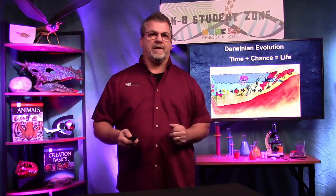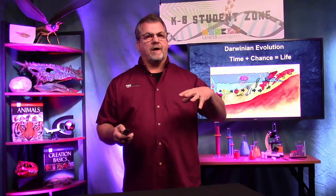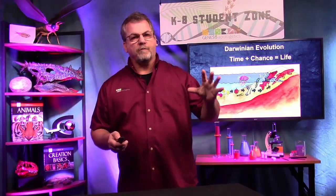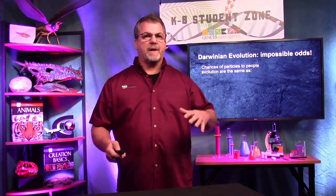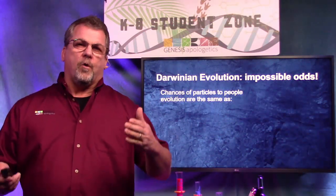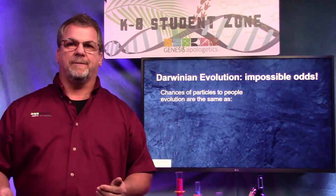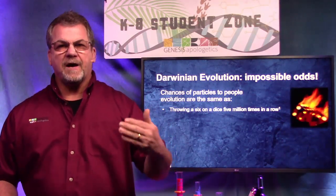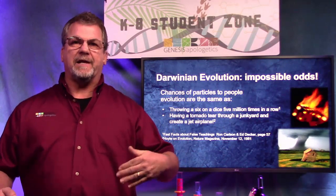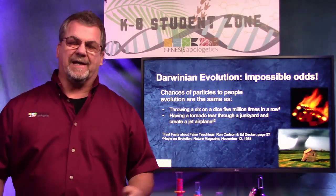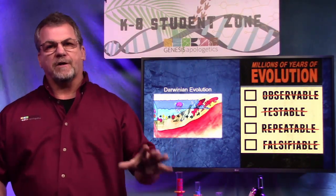Very unlike this one — Darwinian evolution. Darwinian evolution is a belief system; it is the belief that all creatures evolved from nonliving chemicals over billions of years. There was an evolutionist named Sir Fred Hoyle, a mathematician, who calculated the odds of evolution — from goo to zoo to me and you — at the same odds as rolling a six on a die five million times in a row, or a tornado ripping through a junkyard and creating an airplane. So Darwinian evolution is not founded on good science.